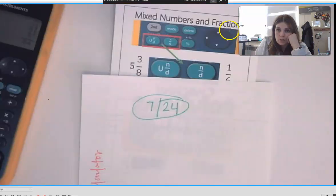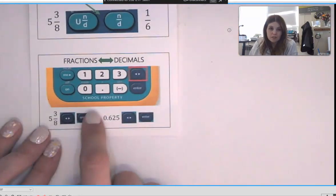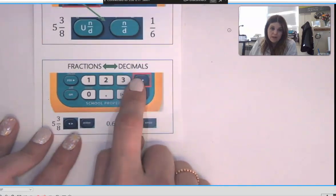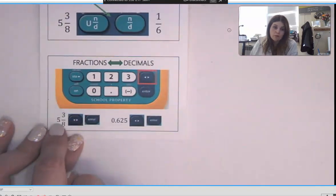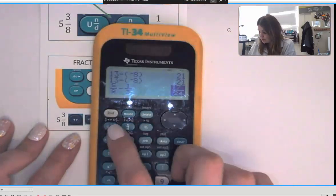Once you get to 13, 13 through 16, you actually have to do some converting and that is this bottom part on your cheat sheet. So right here it has fractions to decimals. This button that has the red box around it, that tells you how you convert.